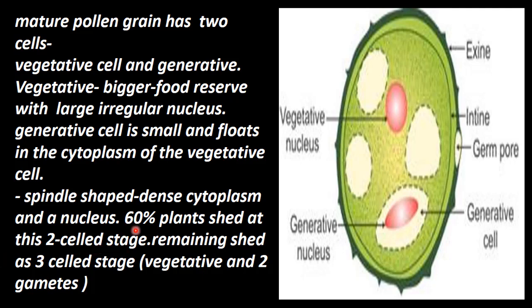The remaining 40 percent of plants shed the pollen grain at the three-cell stage, where there is one vegetative cell and two gametes from the beginning itself. Thank you students, we will meet again in the next discussion.